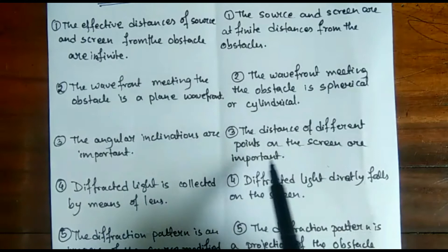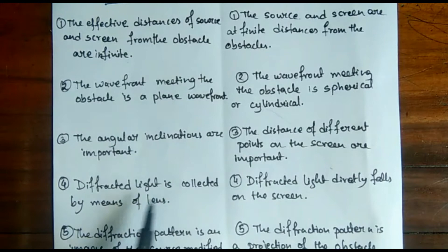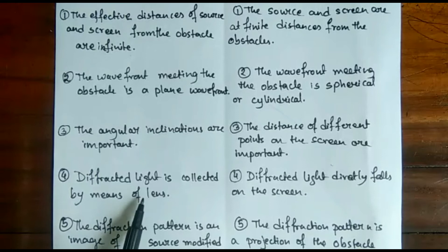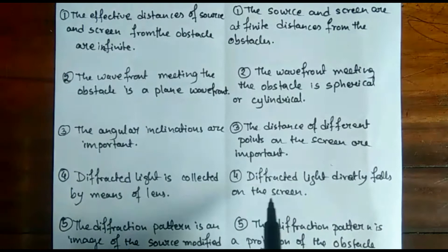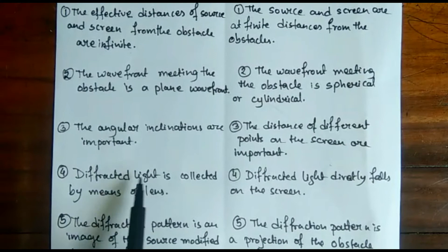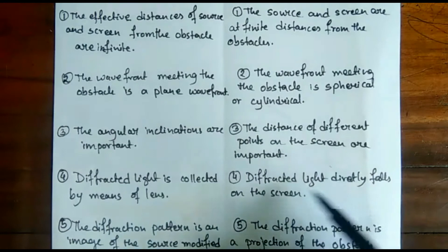The fourth point is that diffracted light is collected by means of a lens for Fraunhofer diffraction. As shown in the previous video, we use a convex lens in order to converge the image to form on the screen, which is why the diffracted light must be collected by a convex lens. For Fresnel diffraction, the diffracted light directly falls on the screen because they are already at a finite distance, so no such lens is used.